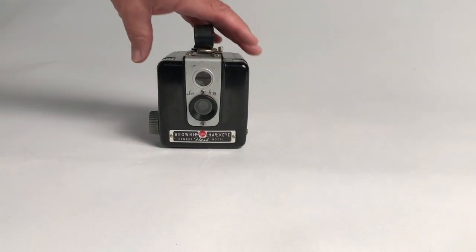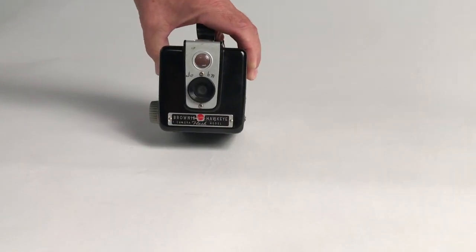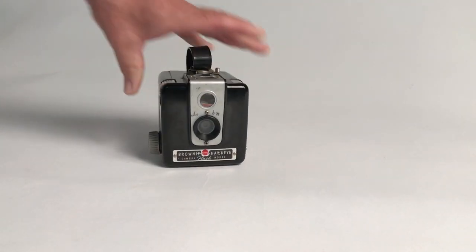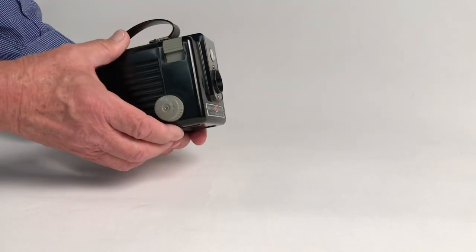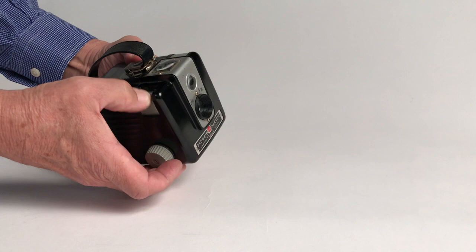Okay, we're going to talk about the Brownie Hawkeye camera. Uses 620 film, time period about the 1950s. We have some things out that are interesting. This is the shutter release.